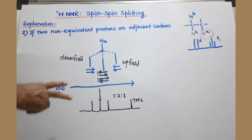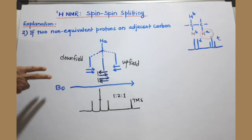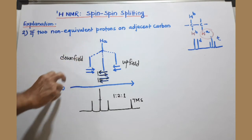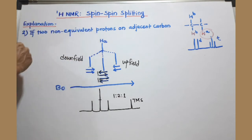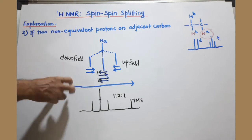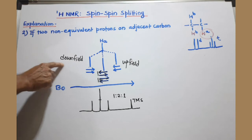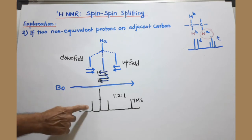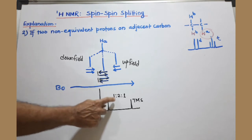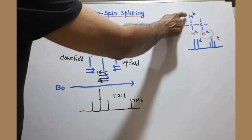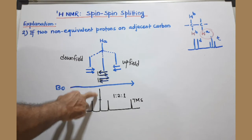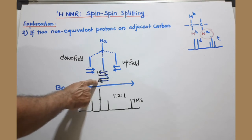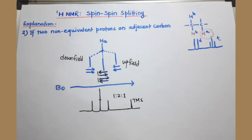One more possibility: both tiny bar magnets reinforce the applied magnetic field — deshielding. To bring HA into resonance we need to decrease the applied magnetic field, meaning we move to the downfield region, away from TMS. In this way, we get a triplet because of two tiny bar magnets. The middle line has double height because of the two possibilities where the net result is zero — giving the ratio 1:2:1, as expected for a triplet.